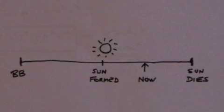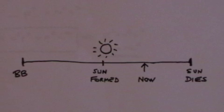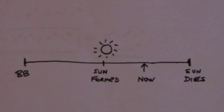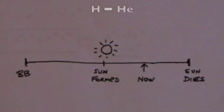Our own sun, for example, is five billion years old. It still has another five billion years to go. Throughout that time, it is steadily converting hydrogen into helium.